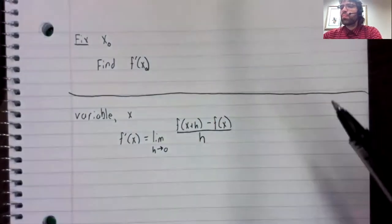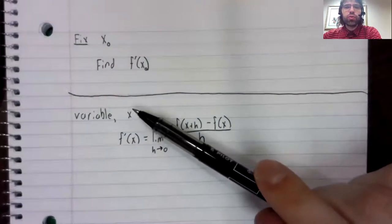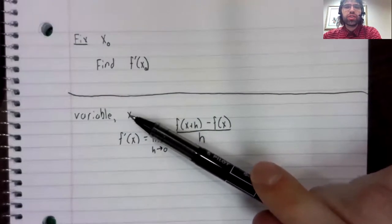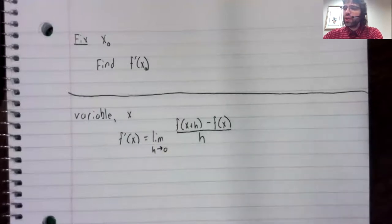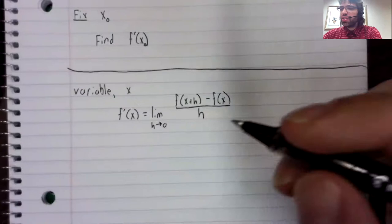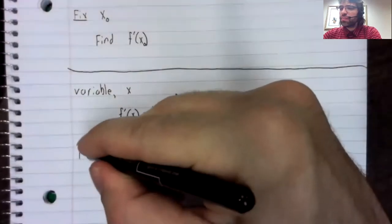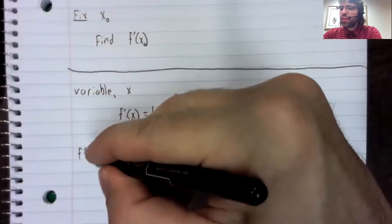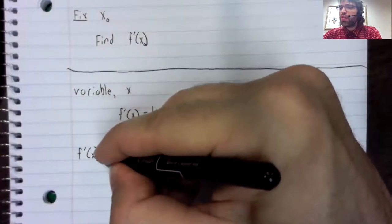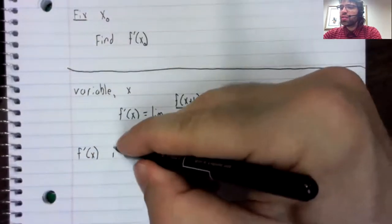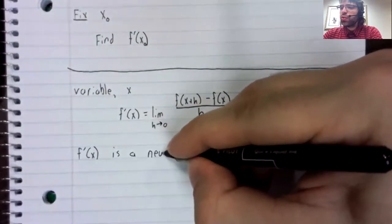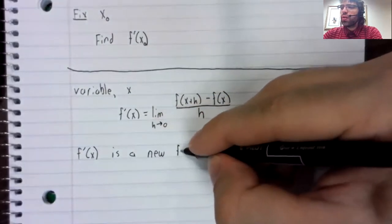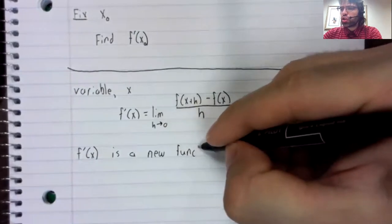But because x is no longer a constant, neither is this. Instead, f prime of x is a new function.